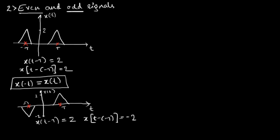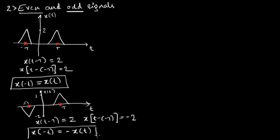A signal x of t is said to be an odd signal when x of minus t is equal to minus x of t. When signals satisfy this condition, it is called an odd signal.